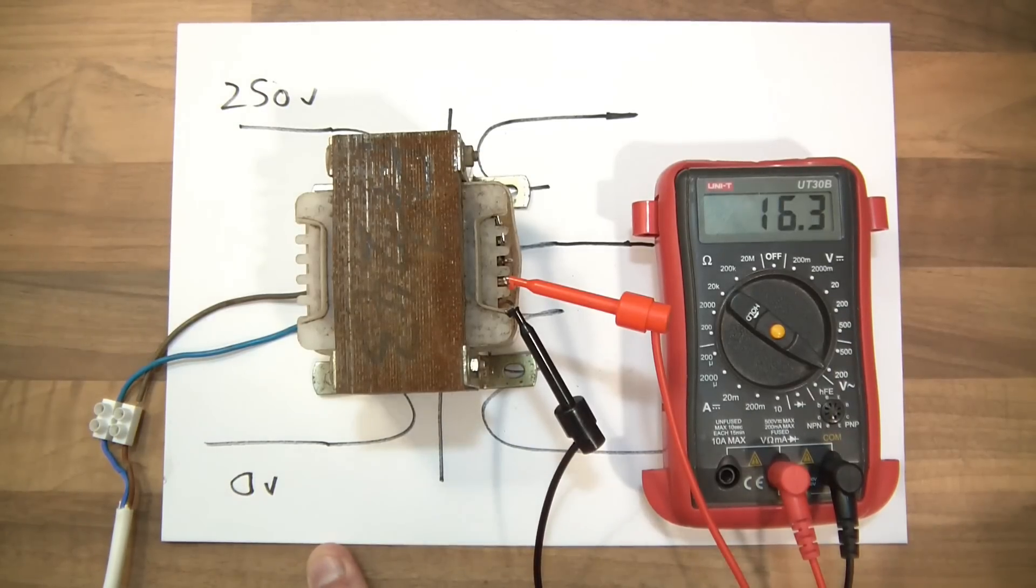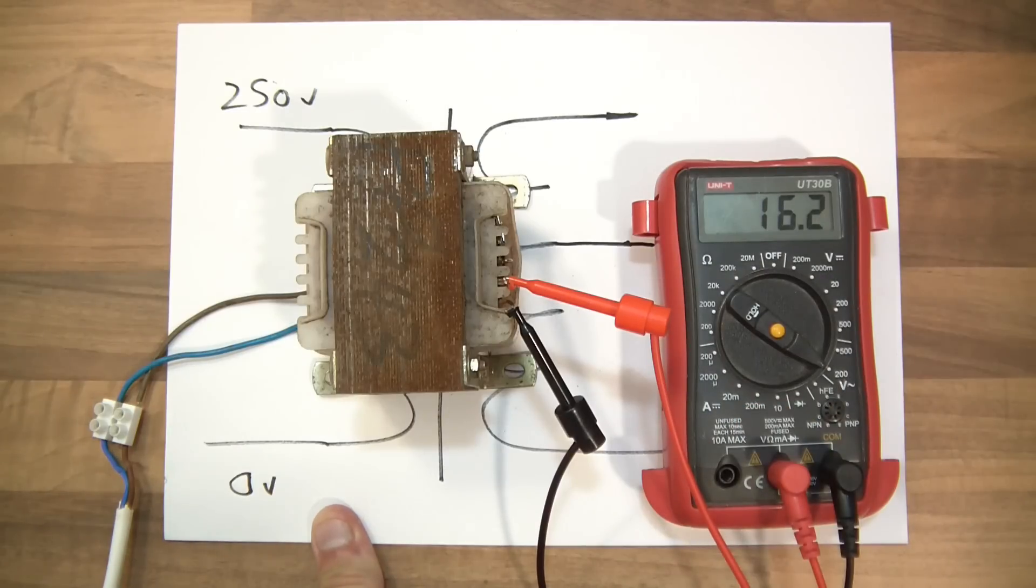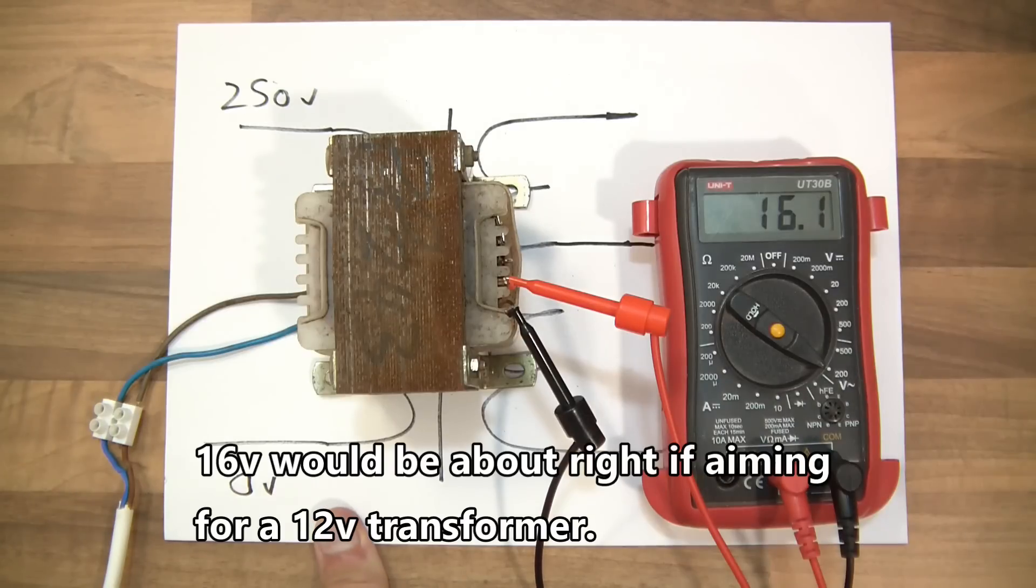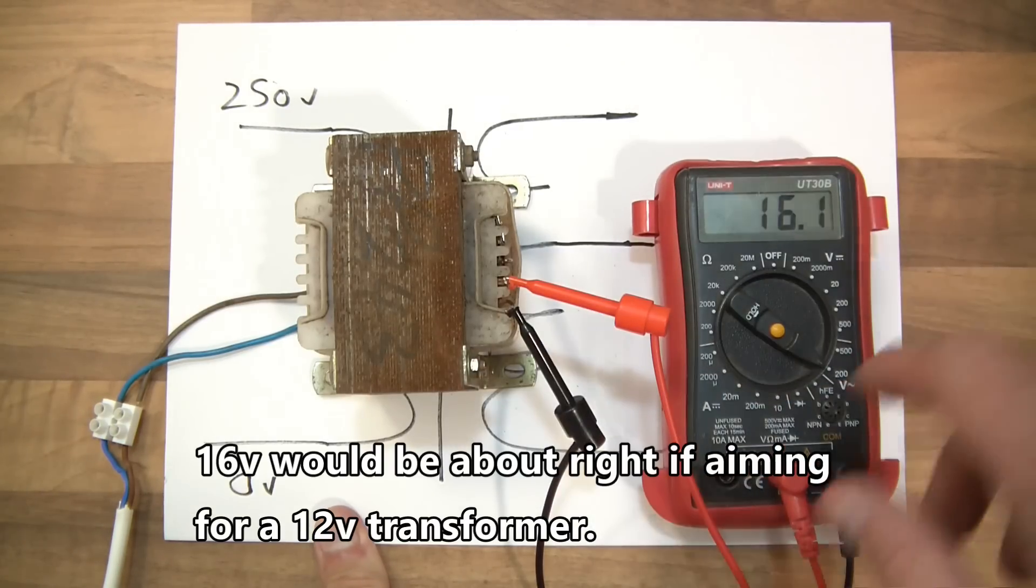Okay. What I should have done as well really is tested what voltage I'm actually getting out of the plug socket, but I think it's 250. Anyway, so we're getting 16 volts out of there, which that's probably intended to be 12 or 13 volts, but okay, perfect. That's 16 volts, or could say 12.